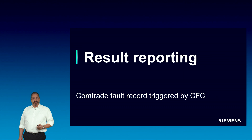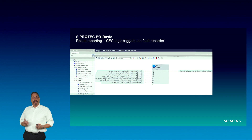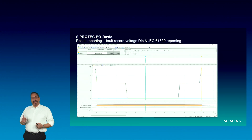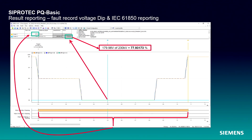COMTRADE triggered records by CFC: I will show you an example to trigger the fault recorder. Here you can see a continuous function chart example where I have assigned all kinds of warning indications provided by PQBASIC to the inputs of an OR logic block. The output signal on the right side forces an external start to the fault recorder. The result is a fault record in COMTRADE format, which provides a graphical instance of the detected event. The fault record shows the RMS signals and the warning signal as a binary track at the bottom. The blue cursor in the middle measures an extreme value of 179.98 kV, which is exactly 77.93% of the nominal voltage of 230 kV. The yellow cursor on the right shows that the voltage dip had a duration of 1.079 seconds.